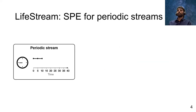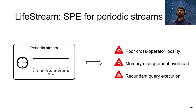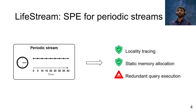LiveStream takes advantage of this periodic nature of the data stream and solves the three key inefficiencies by proposing optimizations like locality tracing, static memory allocation, and targeted query processing.